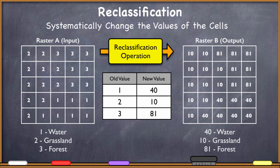I can be as arbitrary about this as I would like. In this case, I've just changed the new values to 40s, 10s, and 81s, and have reclassified the raster. So if you need to systematically change the values of a raster, then your go-to tool should be reclassify. You need to perform a reclassification operation.